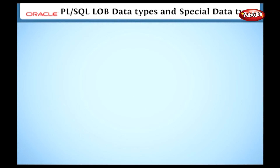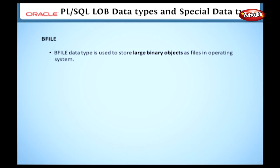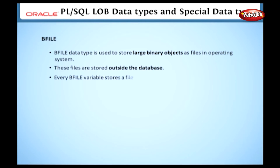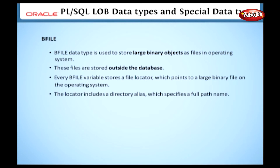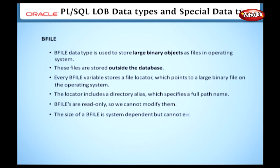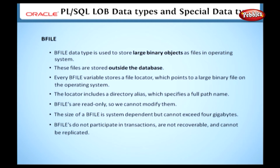First, let's see the BFILE data type. BFILE data type is used to store large binary objects as files in the operating system. These files are stored outside the database. Every BFILE variable stores a file locator which points to a large binary file on the operating system. The locator includes a directory alias which specifies a full path name. BFILEs are read-only, so we cannot modify them. The size of a BFILE is system-dependent but cannot exceed 4 gigabytes. BFILEs do not participate in transactions, are not recoverable, and cannot be replaced.